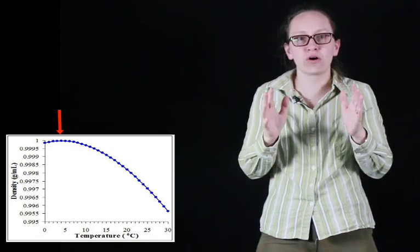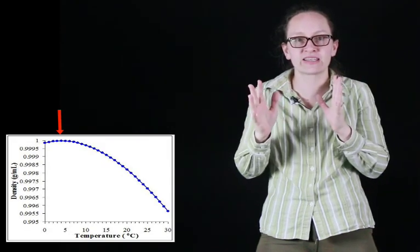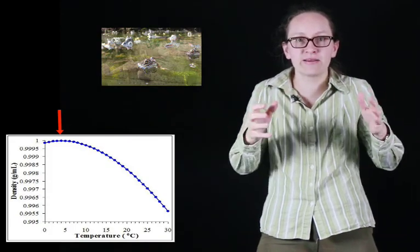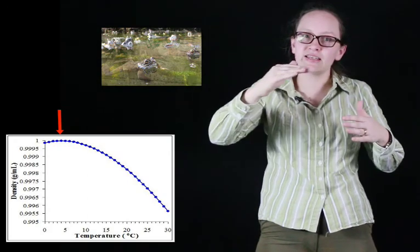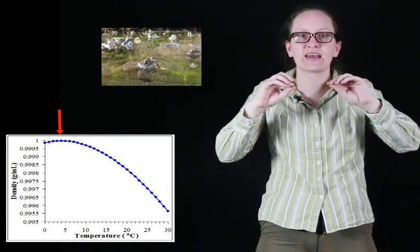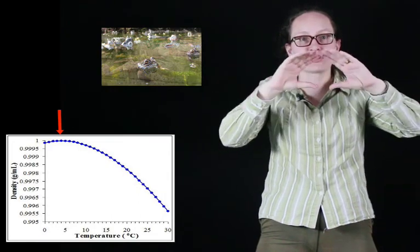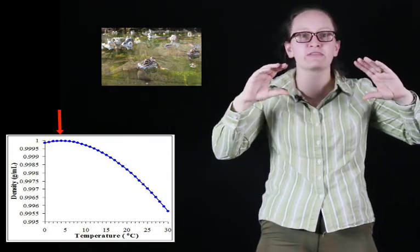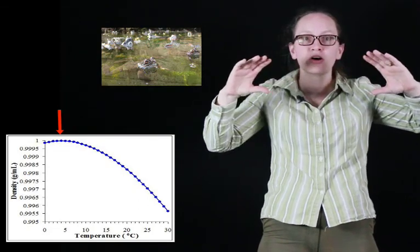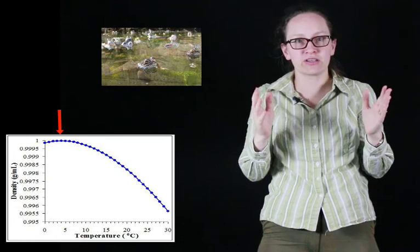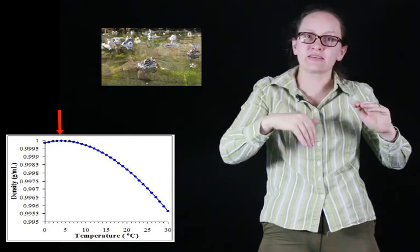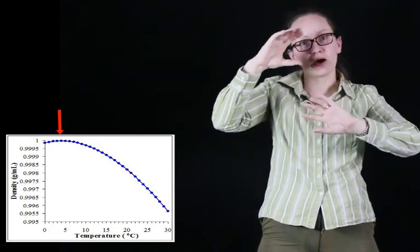Imagine that we had a pond on a warm day — the temperature is well above 4 degrees C, maybe 24 degrees C. The pond is at thermal equilibrium at 24 degrees C. The sun comes up and starts heating the pond. As the pond heats, the water expands a little bit and that expanded water is less dense, so it floats on top. On a warm day, you end up with a warm layer of water on top of the pond. This is why the top of the water in a swimming pool is much warmer than down below — the warm water is floating on top of the cooler water.